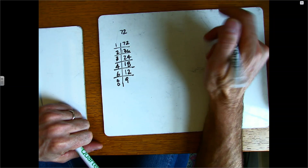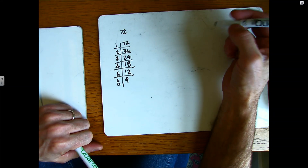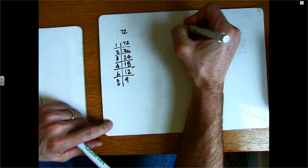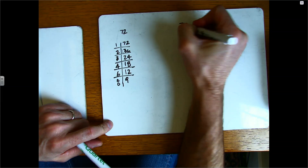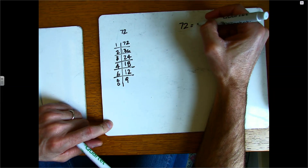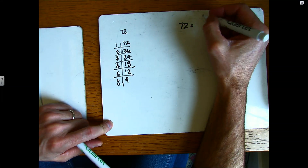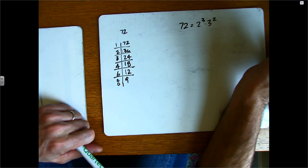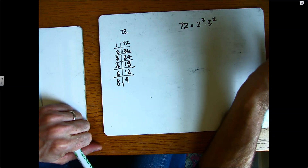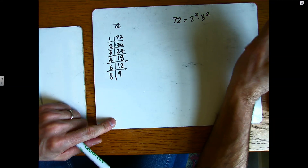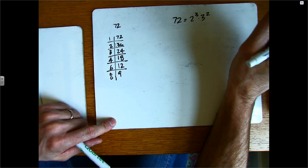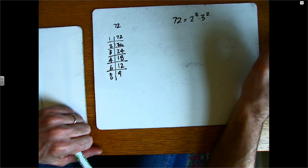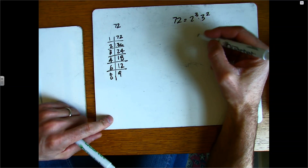Here's what I wanted you to take a look at: the prime factorization of 72. So 72's prime factorization is 2 to the third times 3 squared. Hopefully you were able to get that. The question is, what happens to each one of these factor pairs in terms of their prime factorization?